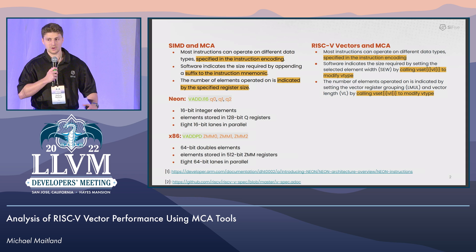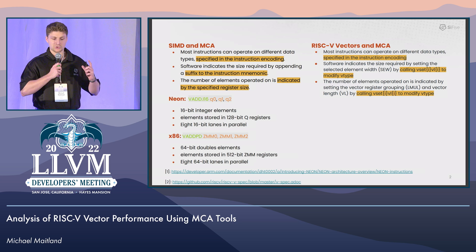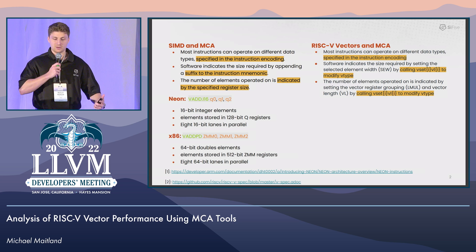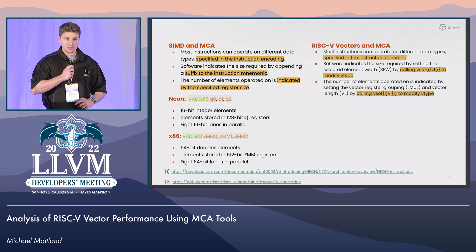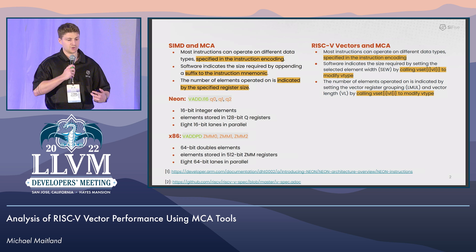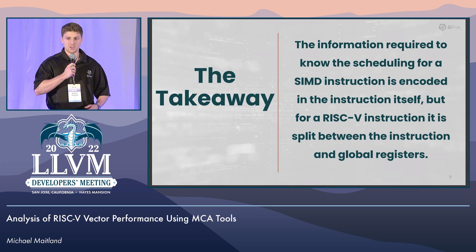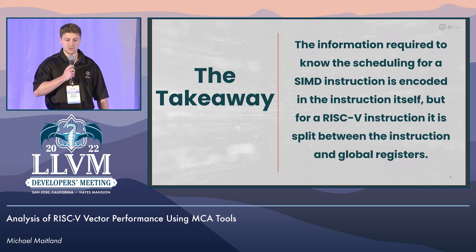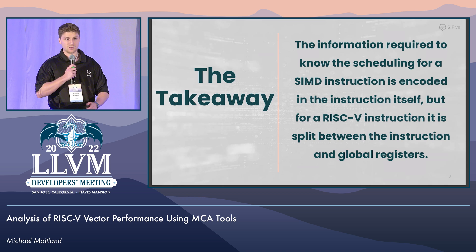On RISC-V however, the instructions themselves specify what data types they operate on, but there's also global state in the V-type or the VL registers which convey information that is important in resolving the correct scheduler class. The takeaway is that for SIMD instructions the scheduling information is encoded in the instruction itself, but for RISC-V instructions it's split between the instruction and global registers.